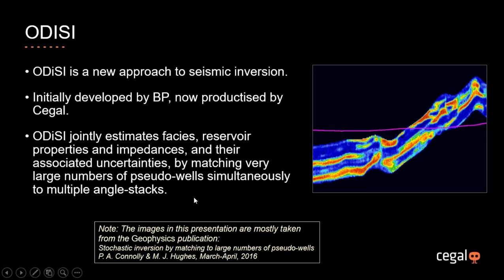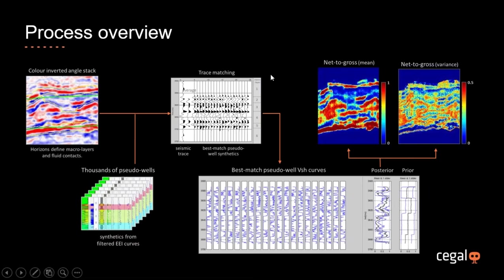Odyssey is a joint facies inversion estimation process. It estimates reservoir properties and impedances together with all their associated uncertainties, by matching the seismic to very large numbers of pseudo wells simultaneously against multiple angle stacks. The process starts with seismic data — in this case color-inverted angle stacks — and works one trace at a time. At each trace location, it generates several thousand pseudo wells, each tailored for that precise location in space.